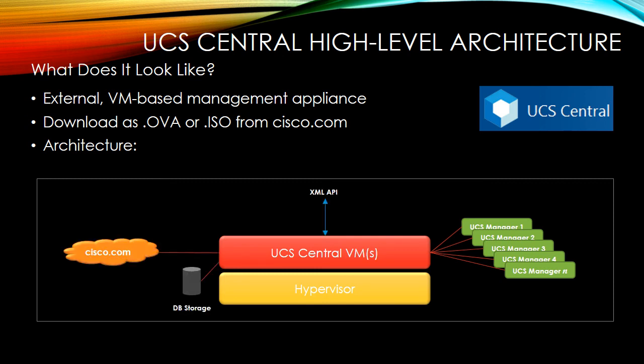UCS Central communicates in a variety of ways. We can connect to database storage out to cisco.com and through an API, so we can easily integrate it with other tools. Most commonly we administer it through HTTPS, although there are other ways to accomplish administration. The concept behind UCS Central is simple: instead of managing every UCS domain separately, we now have one single central authority for managing thousands of servers, ensuring a consistent, accurate, and easy-to-manage deployment. That is what Cisco UCS Central is all about.